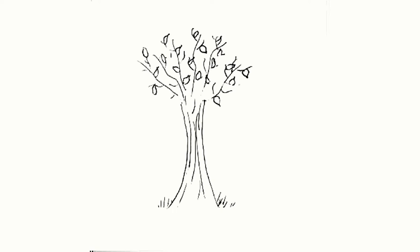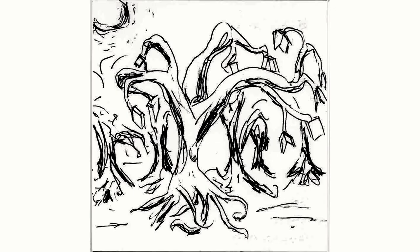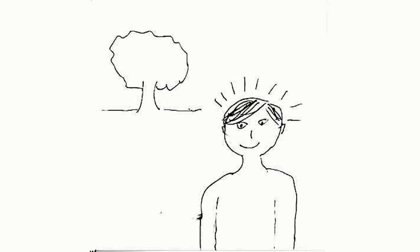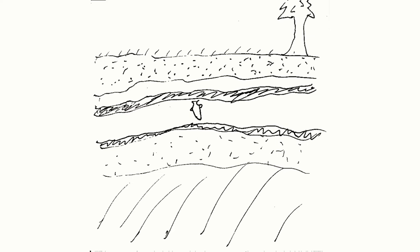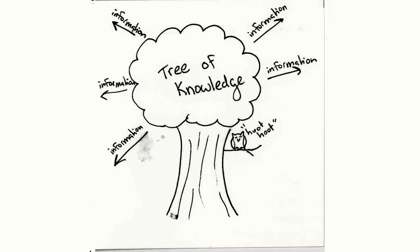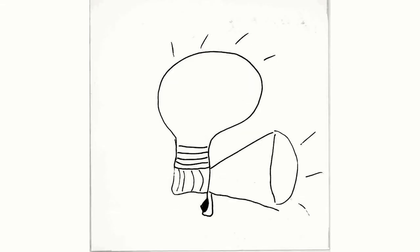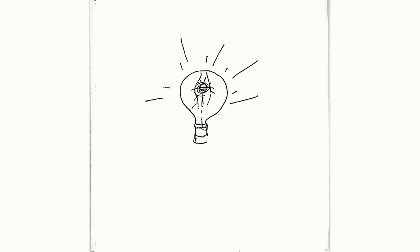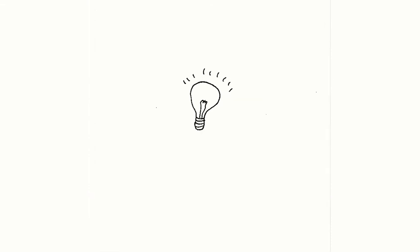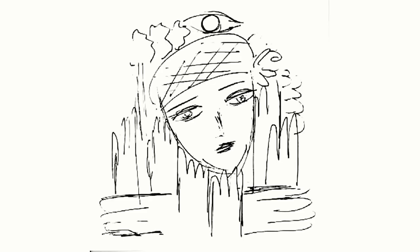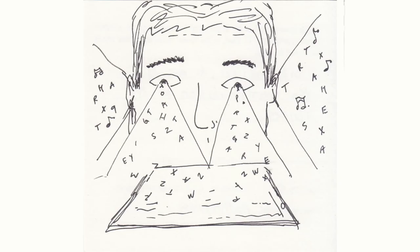We also saw the metaphor of the tree appearing again and again. The tree has been used in many different cultures — from Christianity to various Native American and Native Canadian cultures — to represent knowledge or the universe. We also saw the light bulb, going back to Thomas Edison's Eureka moment, perhaps capturing that moment of invention. Another common metaphor was the eye and vision, representing the ability to see things.